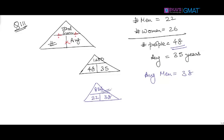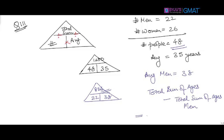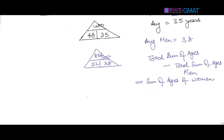I know the total sum of ages of all 48 members and the total sum of ages of men. If I subtract the total sum of ages of men from the total sum of all ages, I get the sum of ages of women. So the sum of ages of women equals 1680 minus 836, which gives 844.